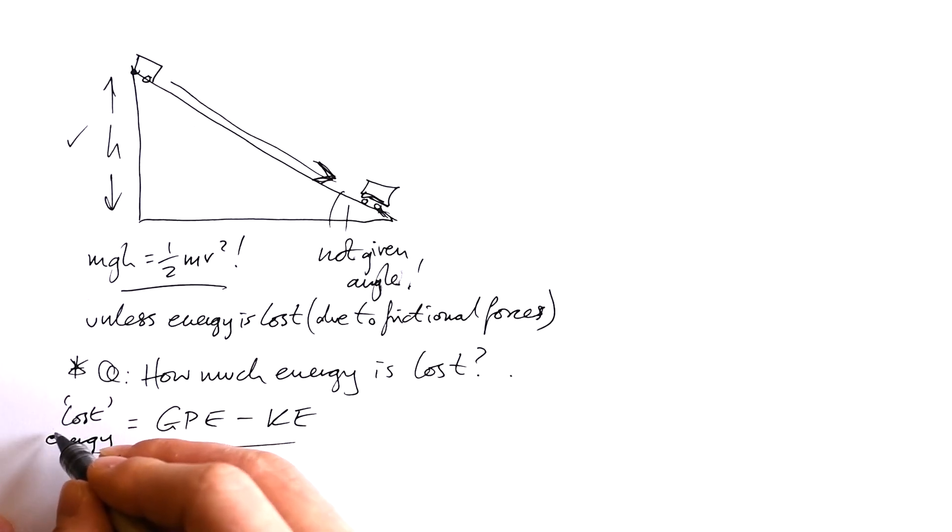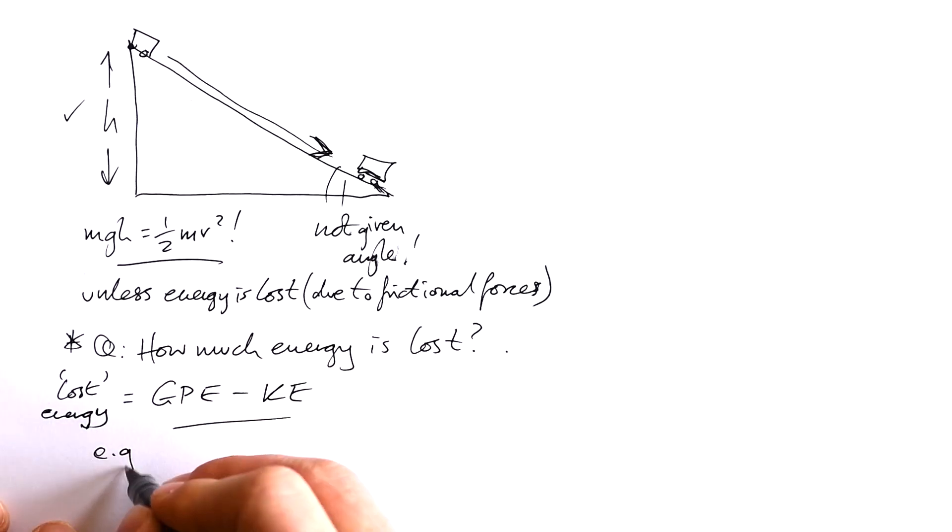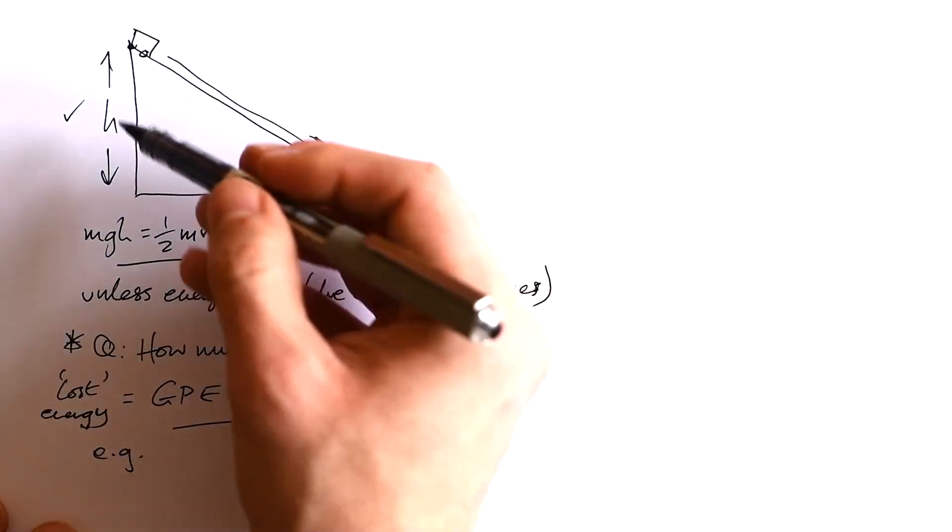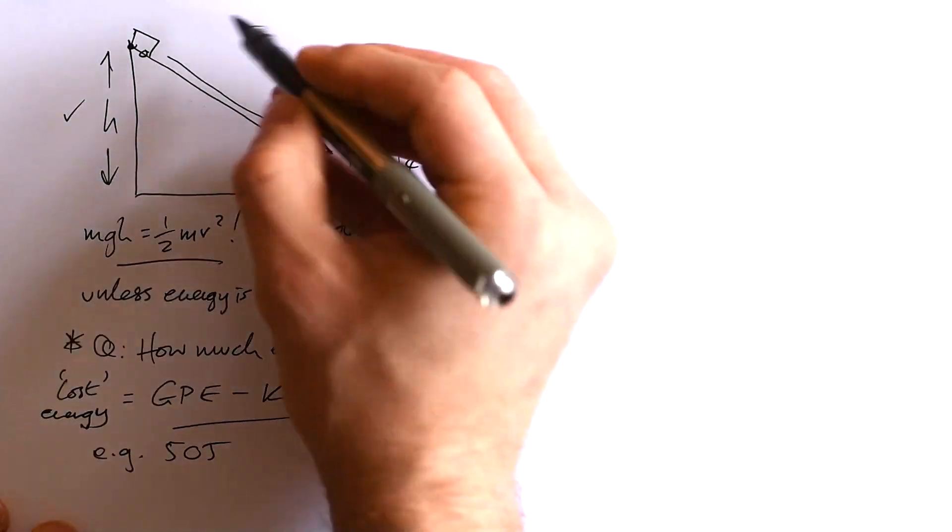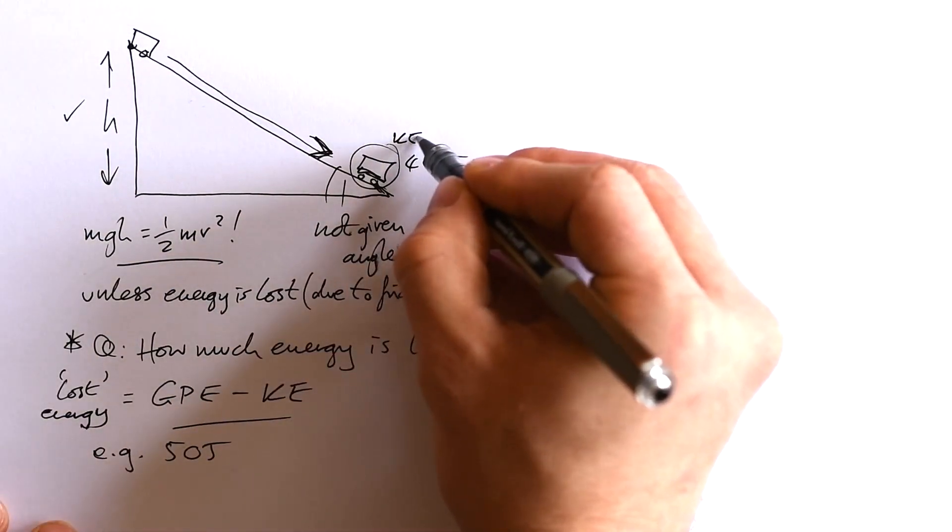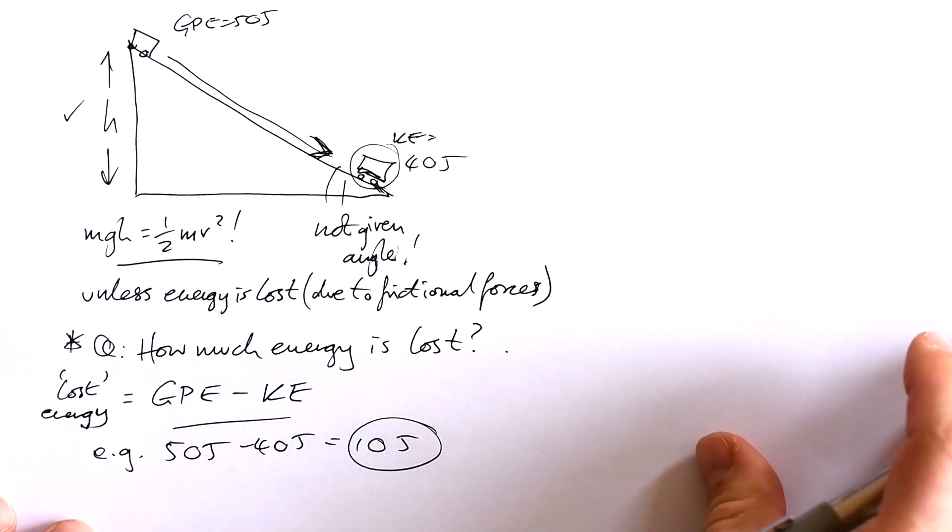When we say lost energy, we mean energy transferred to surroundings—because I know that people get very het up about that nowadays. We know what that means. So let's say that we find that we have 50 joules at the top of GPE, but we only end up with 40 joules of kinetic energy at the bottom. We have 10 joules of lost energy due to frictional forces.